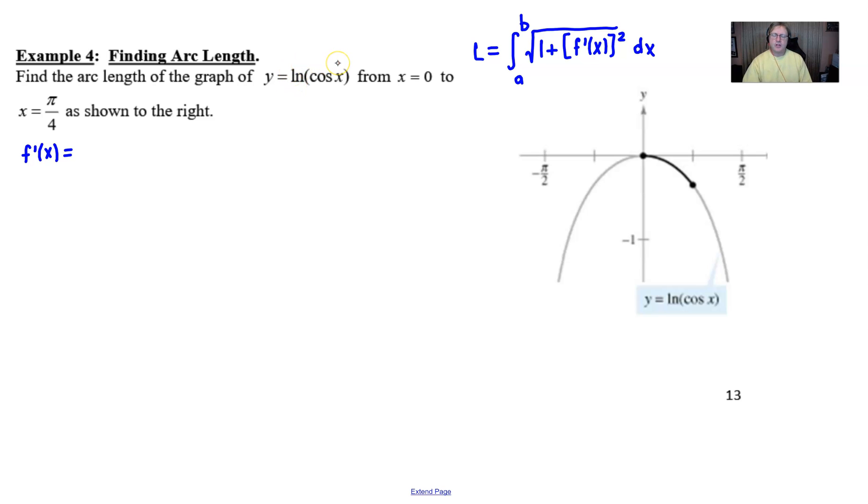We take the derivative of the natural log of u. We say u prime over u is that result. And so the derivative of cosine is negative sine. And we divide that by our u is cosine. And it just so happens, if you recognize that as being negative tangent, that's a great thing. You can turn it into one single trig word, which in turn does make squaring it easy. So you end up with positive tangent squared.